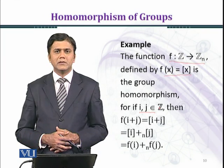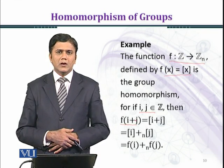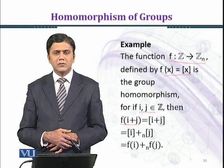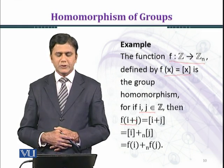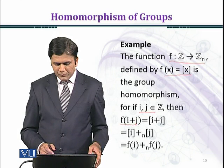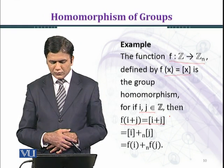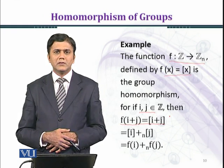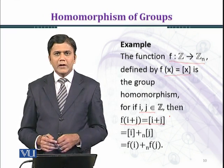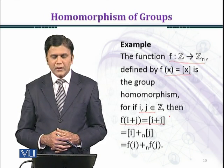We want to find the image under f of their sum i plus j, because ℤ is a group under addition. Then the image of i plus j would be [i+j] class, and we are considering here it's under modulo n. When we divide with n, the remainder will be the representative of this class.